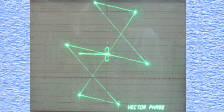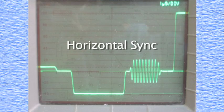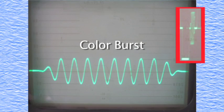There are three basic elements to composite sync: horizontal, vertical, and color.